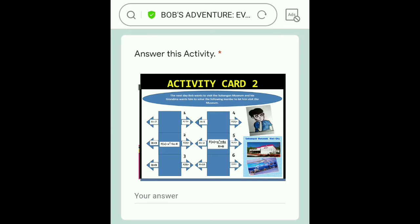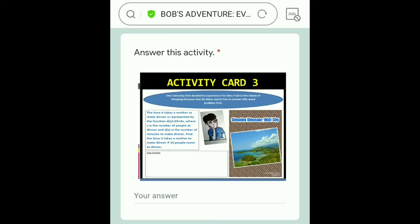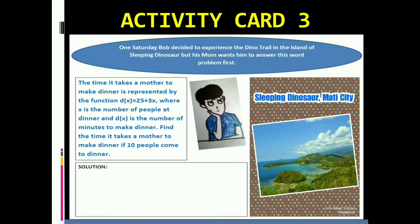Bob wants to visit the Subangan Museum of the province of Davao Oriental, but his grandmother assigned him to solve the given problems before he can go. In this card, Bob decided to experience the Dino Trail in the Sleeping Dinosaur Island of the city of Mati, but he needs to answer the given word problem before his mom will allow him to go.